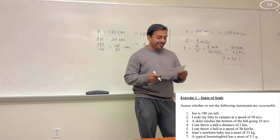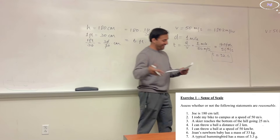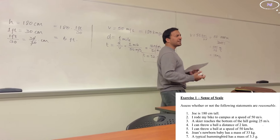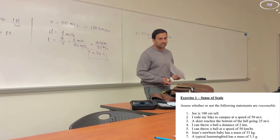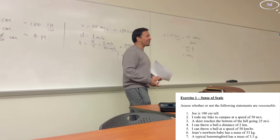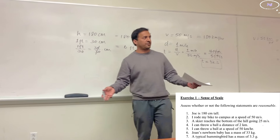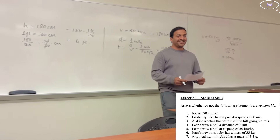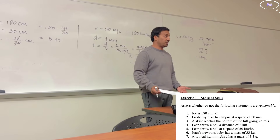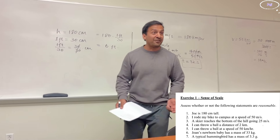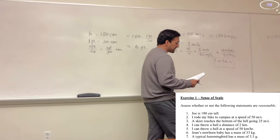The sixth one: 'Jones' newborn baby has a mass of 33 kilograms.' The healthy weight of a newborn is about 3.5 kilograms — around 7 pounds. So 33 kilograms is bizarre. This kind of question relies on general knowledge — things we see around us but never question, like the average weight of a healthy baby.